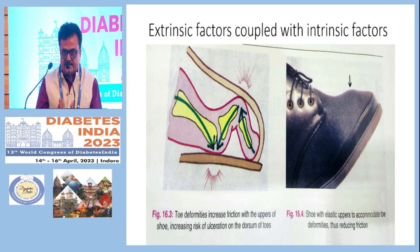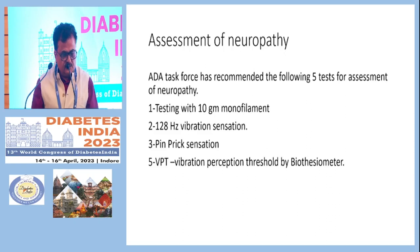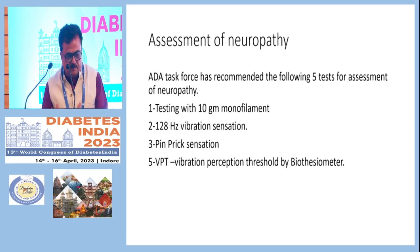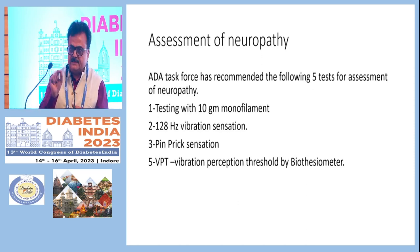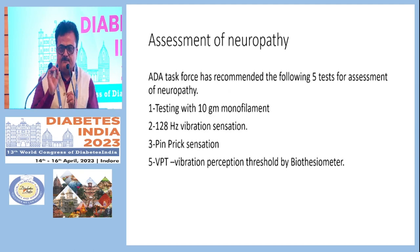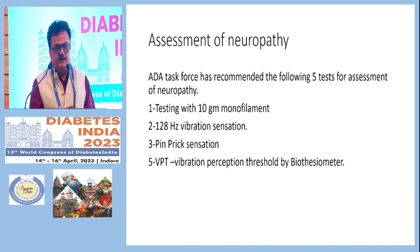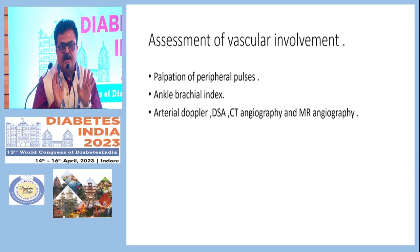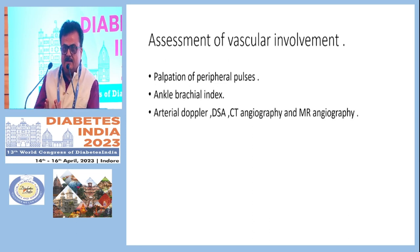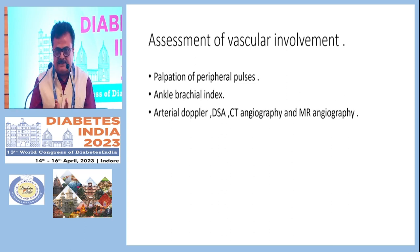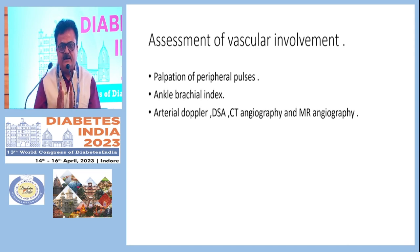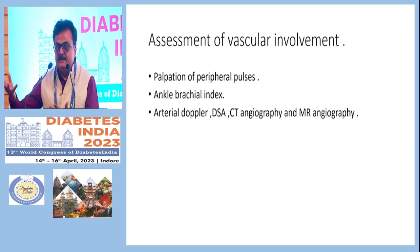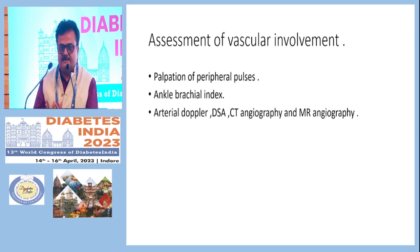Some patients with deformities may require referral to an orthopedic surgeon for correction even before they develop any foot ulcer. For neuropathy assessment: test touch sensation with the 10-gram monofilament, check vibration sense with a 128 Hz tuning fork, check pinprick sensation, and use a biothesiometer if available for quantification of ulcer risk. For vascular assessment: palpate the dorsalis pedis and posterior tibial arteries; check ankle-brachial index — above 1.0 is normal, below 0.9 is mild ischemia, below 0.5 is severe ischemia requiring CT angiography, DSA, or MR angiography.